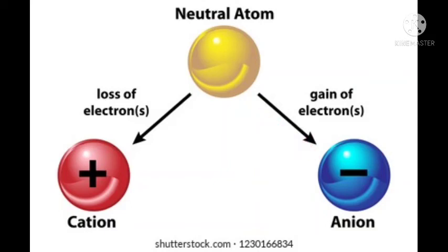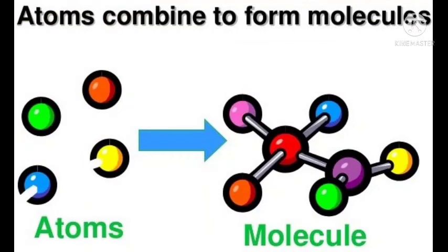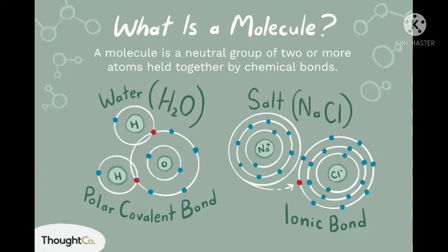Children, atoms generally do not exist independently. So they combine with each other to form groups of two or more atoms which are held together by strong attractive forces. This group of atoms is known as a molecule. A molecule can exist independently.